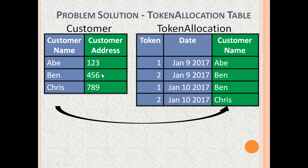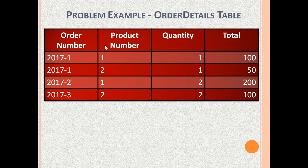Now let us see another example. This problem example is the Order Details Table. It has columns Order Number, Product Number, Quantity, and Total. This table stores data of each line item of every order. The Order Information is stored in a separate Orders Table, and the Product Information including Unit Price is stored in a separate Products Table.